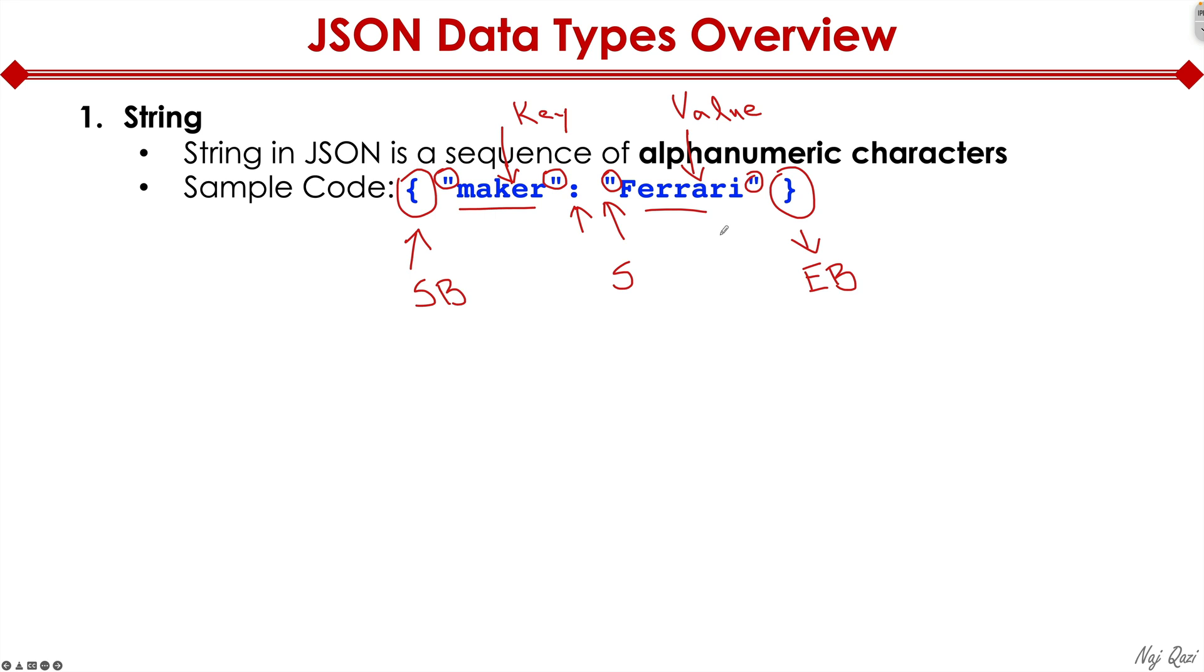So whenever you're reading a JSON code, you're always going to see that it starts off with a curly bracket, it ends with a curly bracket, and in between you have key value pair. Here we're looking at a string data type. Based on this understanding and logic, I'm going to continue building on it and explain other data types.